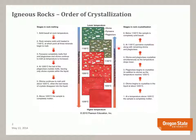The next mineral that appears is pyroxene at about 1100 degrees centigrade, at which point the sample is completely solid, resulting in a rock that consists of olivine, calcium-rich plagioclase, and pyroxene. This is the typical mineral assemblage that you find in a basalt.